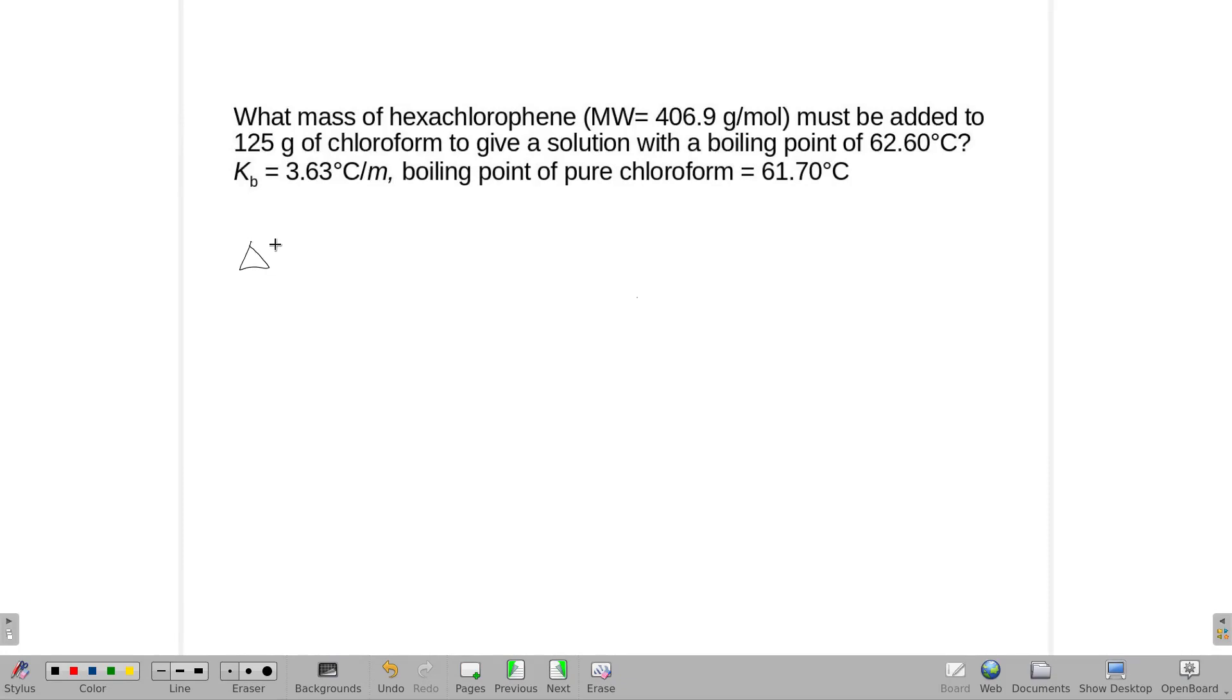Alright, we are doing a boiling point change, so that's our equation. We won't have an i because chloroform and hexachlorophene are neither one ions. But my delta T is going to be the difference of those two.